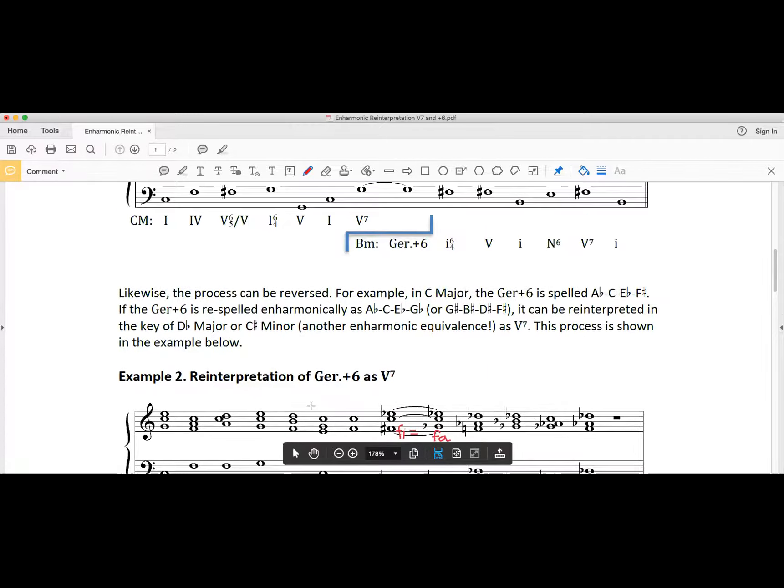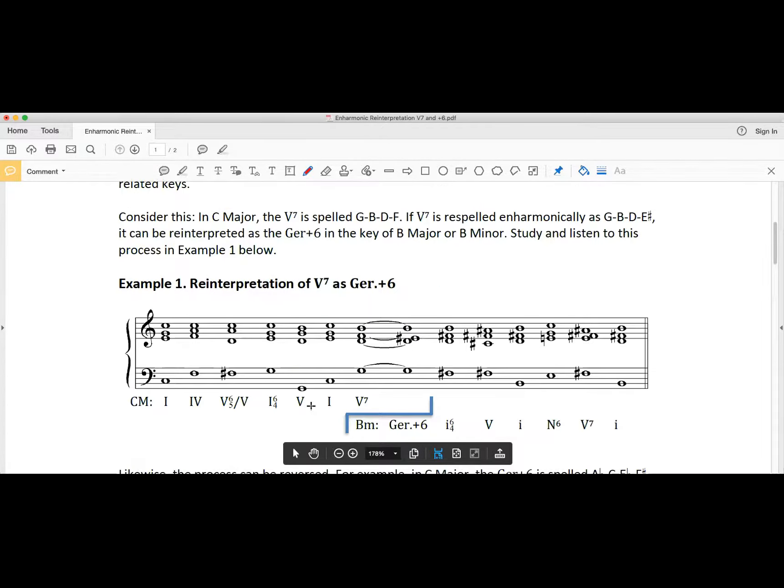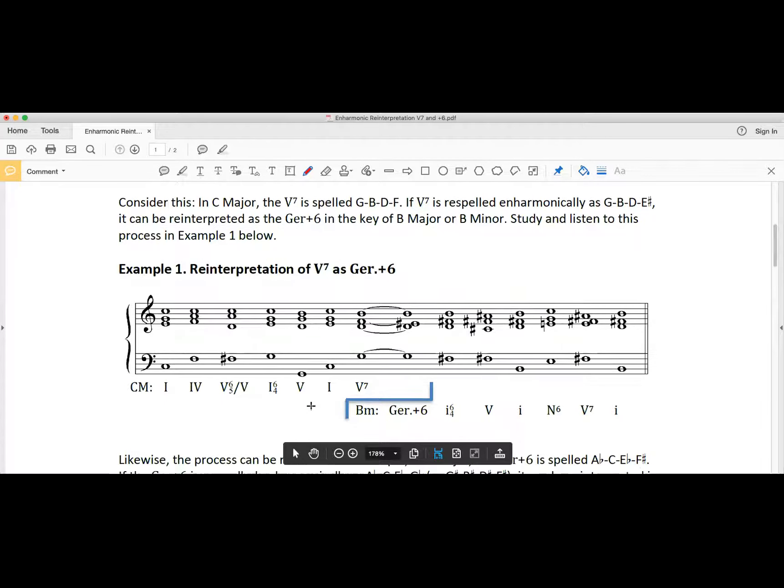We can go the other way as well. So what I'm going to do now is go to example one from our guide, and here you will see instead of pivoting on the augmented sixth and reinterpreting it as a 5 7, I'm going to do it the other way around. This time I'm using the 5 7 in the old key and then reinterpreting it as a German augmented sixth in a new key. Check it out.